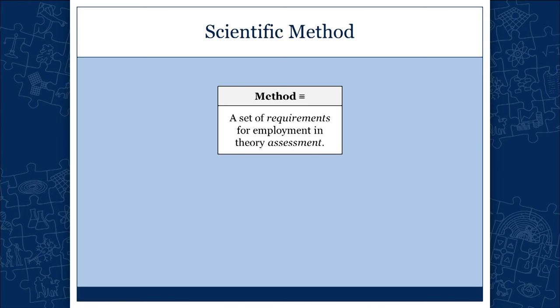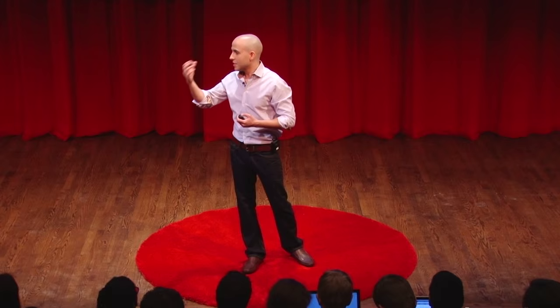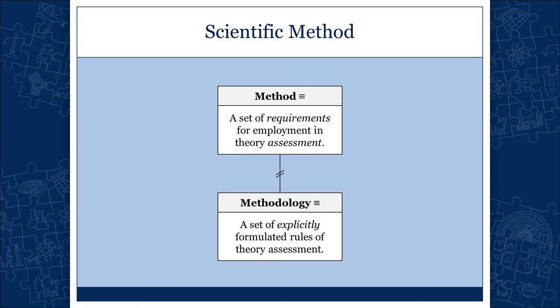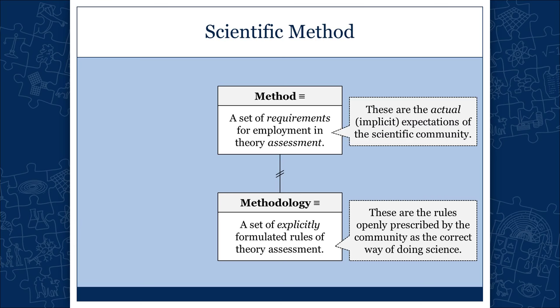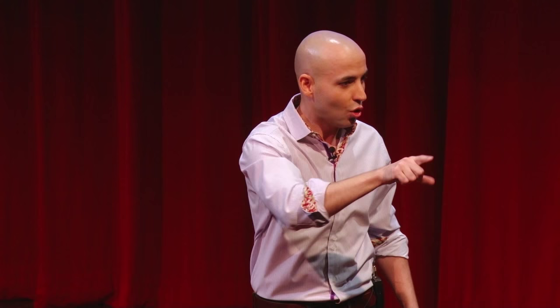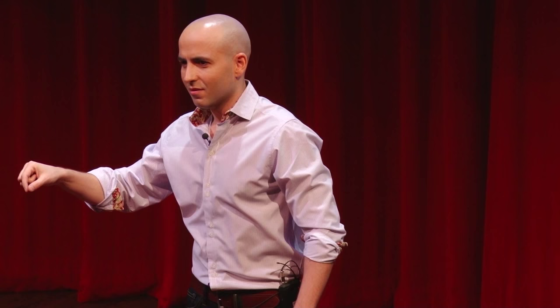Methods should not be confused with methodologies. Methodology is something openly formulated — explicitly stated. Methodology is a set of explicit requirements for theory assessment; that's what scientists say real science should be about. Method is a different thing — it's your implicit expectations, your gut feelings if you want. Think of a movie review: you watch a movie and say it was a waste of time. You certainly have some implicit expectations as to what a decent movie should be like. Those implicit expectations — whether you know about them or not — are your method of movie assessment.